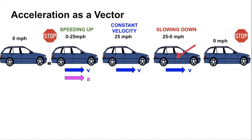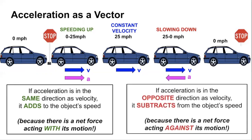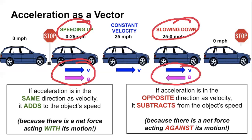What about the slowing-down case? The object is still moving to the right, but now it is slowing down. Why? Because there is a net force acting on it against its motion, which results in an acceleration in the opposite direction of its motion. That acceleration, opposite the direction of motion, acts against the motion and causes it to slow down. So to summarize: speeding up — acceleration and velocity are in the same direction. Slowing down — acceleration and velocity are in opposite directions. In both cases the velocity is to the right; in one case acceleration is also to the right causing it to speed up, and in the other the acceleration is to the left, against its motion, causing it to slow down.